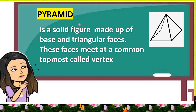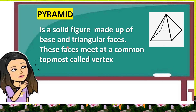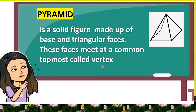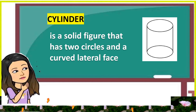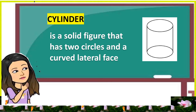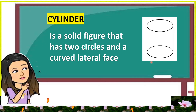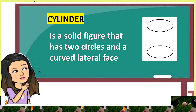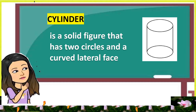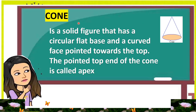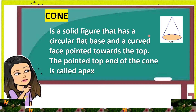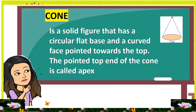A pyramid is a solid figure made up of a base and triangular faces. These faces meet at a common topmost point called the vertex. Next, we have cylinder. A cylinder is a solid figure that has two circles and a curved lateral face.